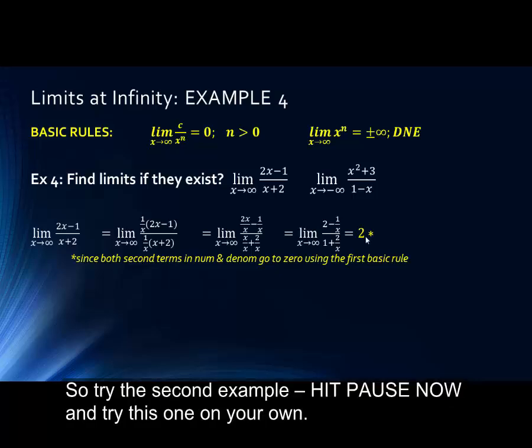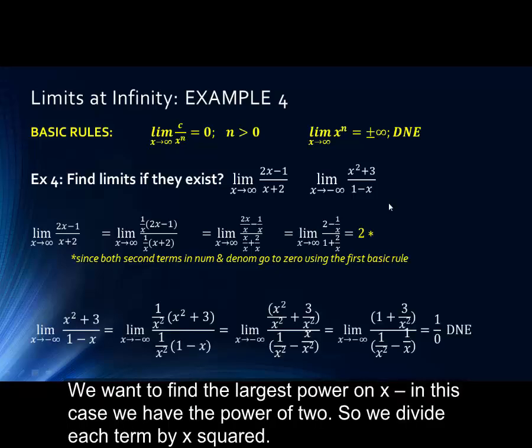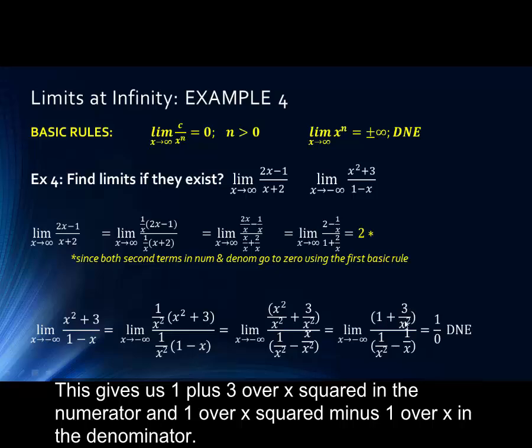So let's try the second example. Hit pause now and try this one on your own. We want to find the largest power of x in the entire equation. In this case, we have a power of 2. So we divide each term by x squared, the same as multiplying numerator and denominator by 1 over x squared. This gives us 1 plus 3 over x squared in the numerator and 1 over x squared minus 1 over x in the denominator.